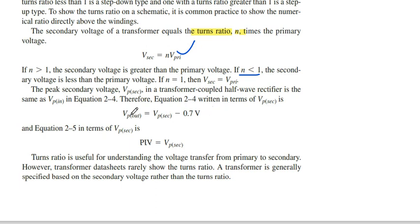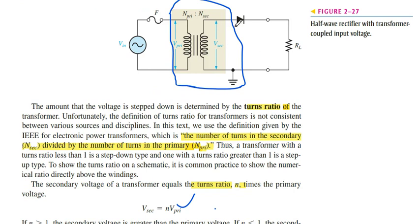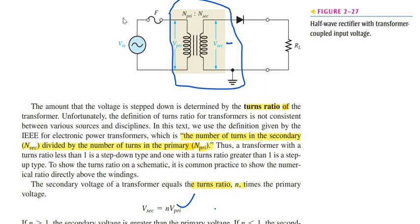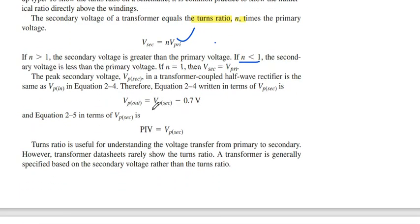In the equation, Vp_out equals Vp_secondary minus 0.7, because the secondary voltage passes through the diode. We must subtract 0.7 volt — the barrier potential — from the secondary voltage to get the output voltage at the load resistance. So Vp_out is always less than Vp_secondary by 0.7 volts.